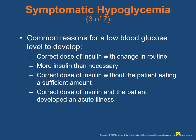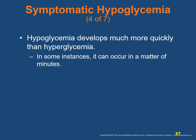Common reasons for hypoglycemia include a correct dose of insulin with a change in routine — the patient exercised more, consumed a meal later than usual, or skipped the meal. They may have taken more insulin than necessary, or taken a correct dose without eating a sufficient amount, or taken a correct dose and then developed an acute illness. Hypoglycemia develops much more quickly than hyperglycemia — in some instances it can occur in a matter of minutes.